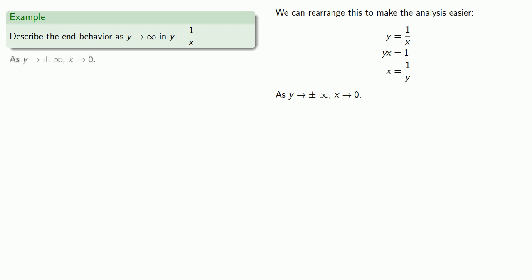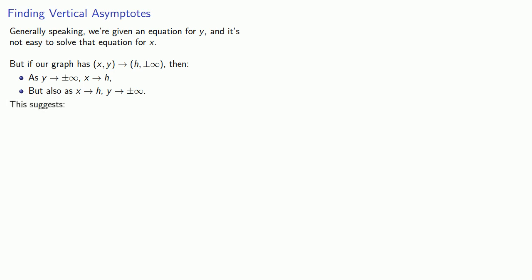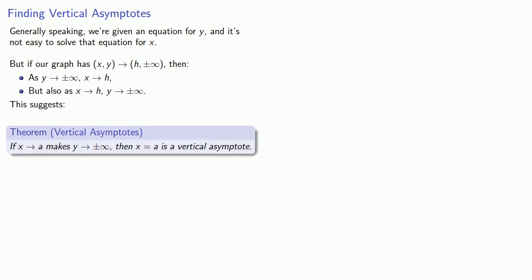So we can summarize: as y goes to plus or minus infinity, x goes to 0. This tells us that x equals 0 is a vertical asymptote. Generally speaking, we're given an equation for y and it's not easy to solve for x. But if our graph has points going to some specific value of x as y goes to plus or minus infinity, we can read this in both directions: as y goes to plus or minus infinity, x goes to h, or equivalently, as x goes to h, y goes to plus or minus infinity. This leads to the important idea: if x going to a makes y go to plus or minus infinity, then x equals a is a vertical asymptote.